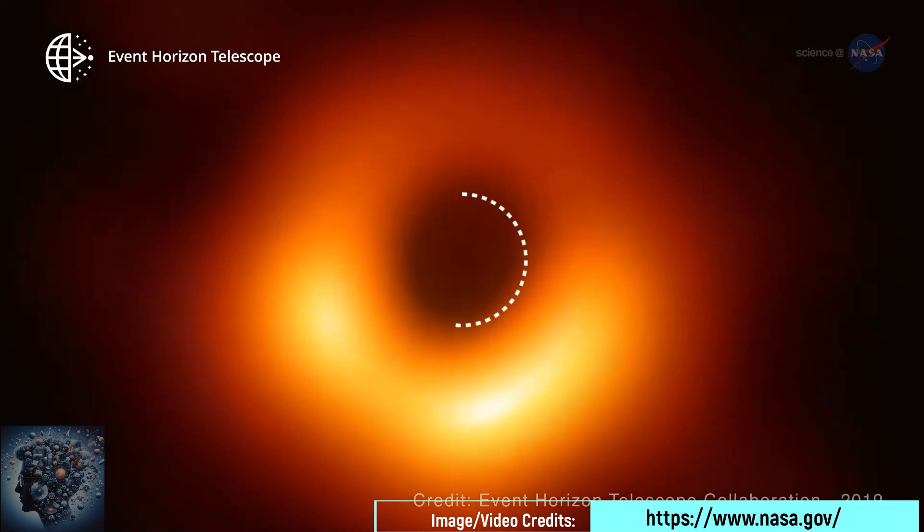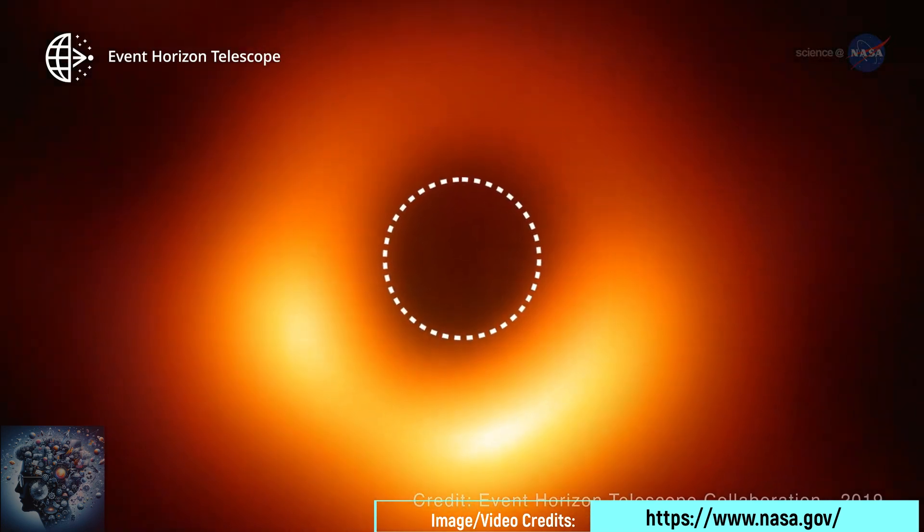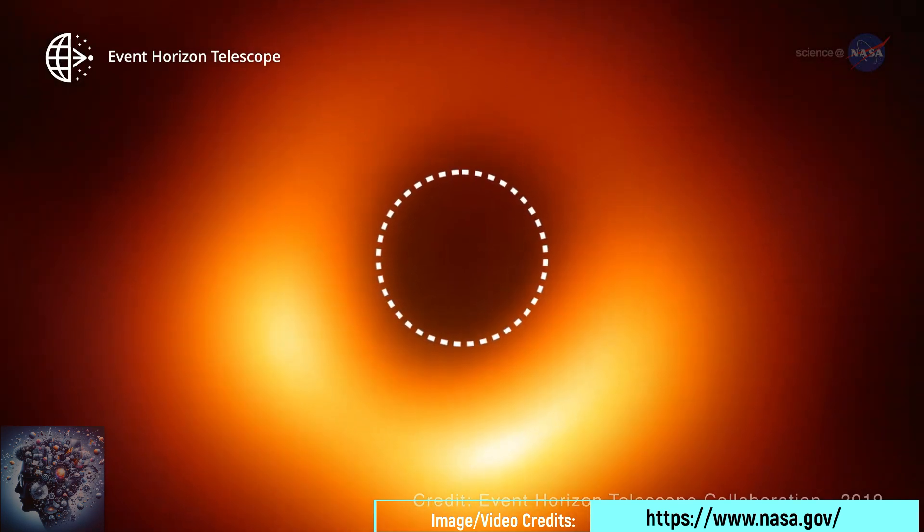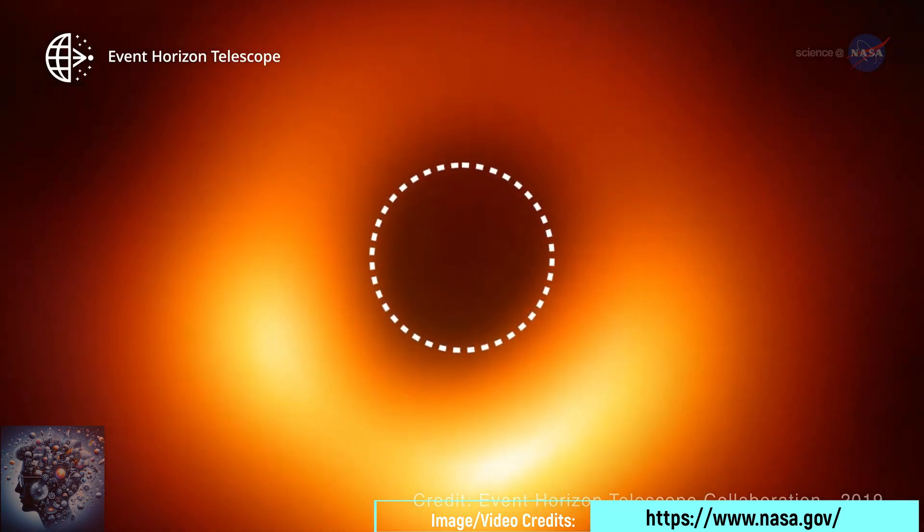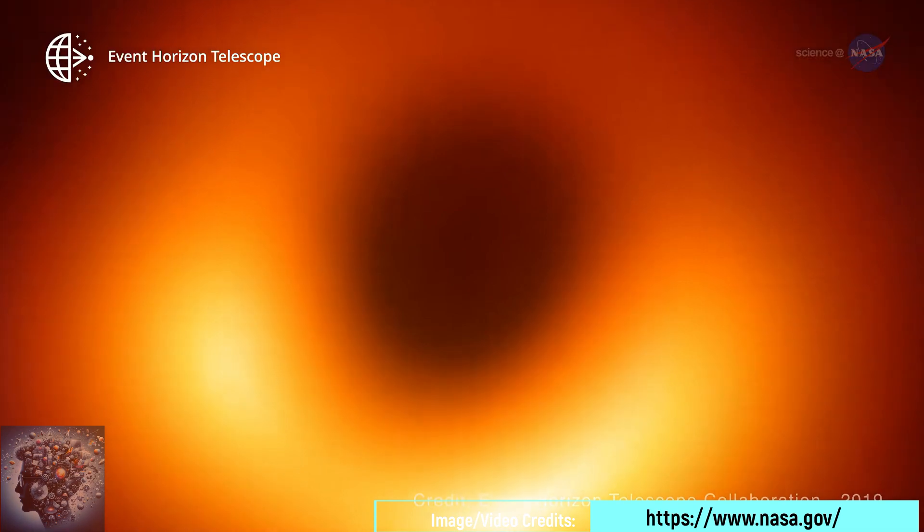Also in the category of supermassive ones are the quasars, which are extremely active supermassive black holes, feeding on matter at a very high rate. Quasars are observed only in the very ancient universe, feeding so intensely that the gas and matter surrounding them are so bright that they overshadow the entire galaxy where they are.